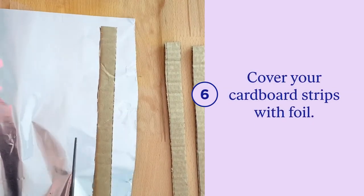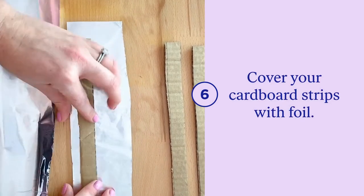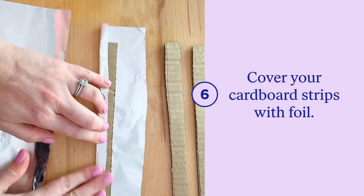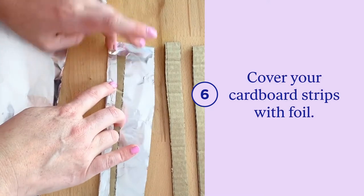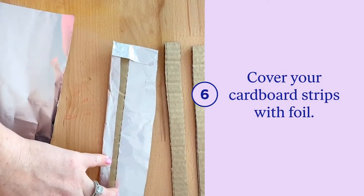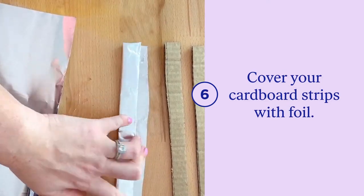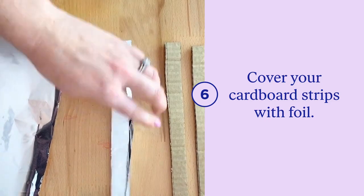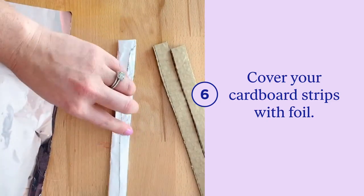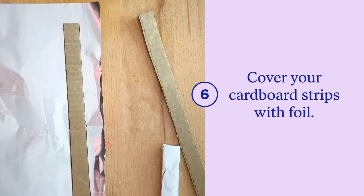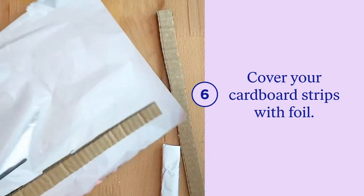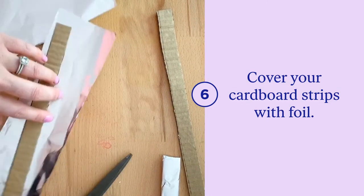Once you have your three strips of cardboard cut, you can grab your aluminum foil. Here, wrap each piece of cardboard in the foil by folding it over like so. I like to secure mine with a dot of hot glue at the end too. Do the same for all three of your pieces. Make sure that you are keeping your foil nice and tight and that you have one side that is very smooth.